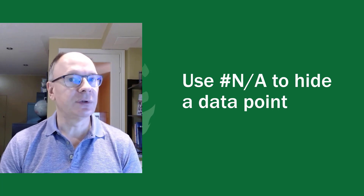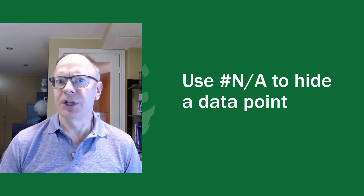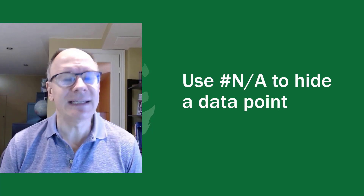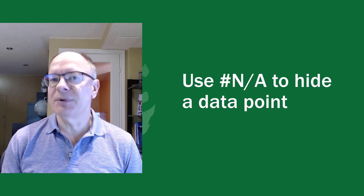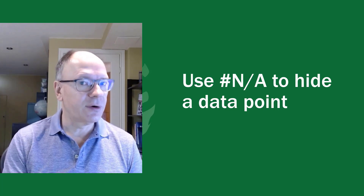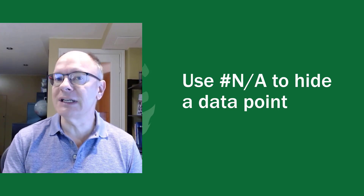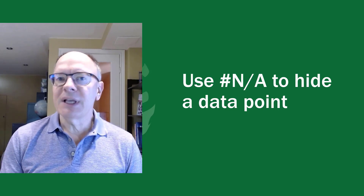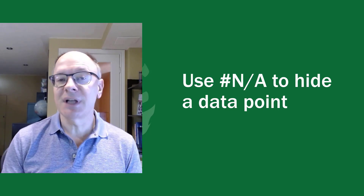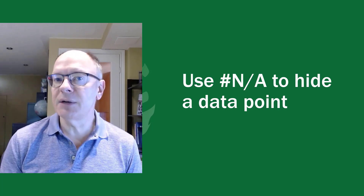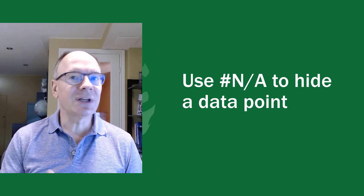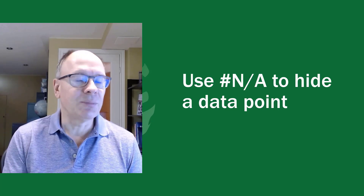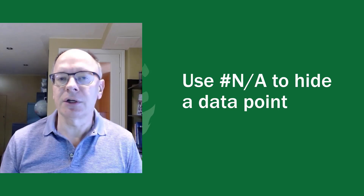The next chart hack is using the NA error value to hide a data point. Initially you might think: why would I want an error to show up on my chart? That doesn't sound like a good idea — and it wouldn't be, except that the NA error value by default does not appear on a chart. This is valuable because it allows you to set up data series where some — maybe most — of the data points you don't want to show up.